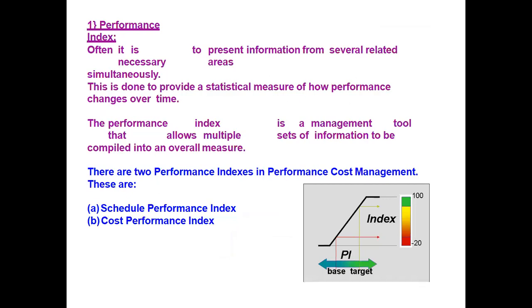Performance index is again divided into schedule performance index and cost performance index — one is relevant with time, the other with cost. Performance index is used to present information from several related necessary areas simultaneously. This is done to provide a statistical measure of how performance changes over time. Performance index is a management tool that allows multiple sets of information to be compiled into an overall measure.